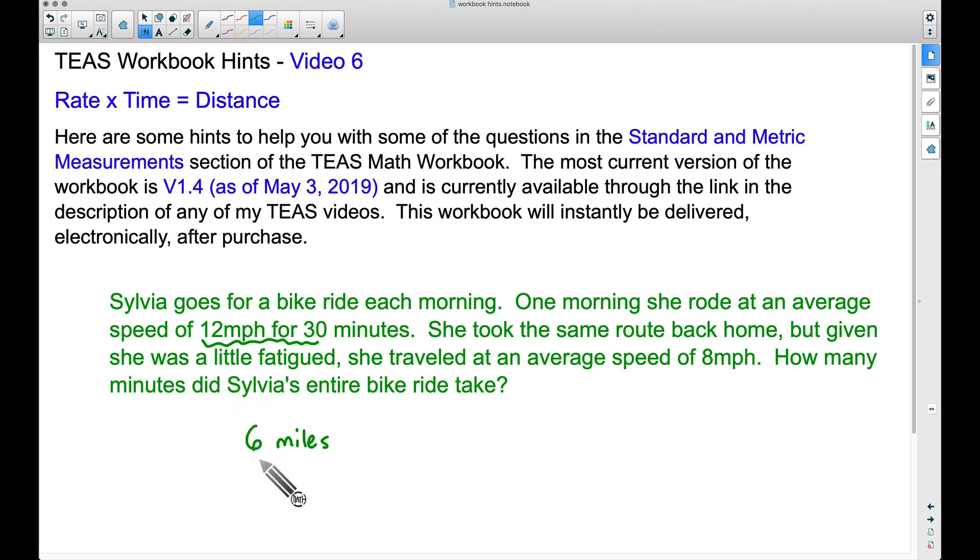So now if the question did say how many miles was the entire bike ride, we would say 12 miles because she took the same route back home. But what we're trying to figure out is how many minutes did Sylvia's entire bike ride take. So since she took the same route back home, she traveled for 6 miles back home. Now let's take the formula: rate times time equals distance. Rate times time is equal to distance. Well what do we know about her bike ride back home? Her rate, her speed was 8 miles per hour. Time, some time that we're trying to figure out, is equal to a distance of 6 miles.